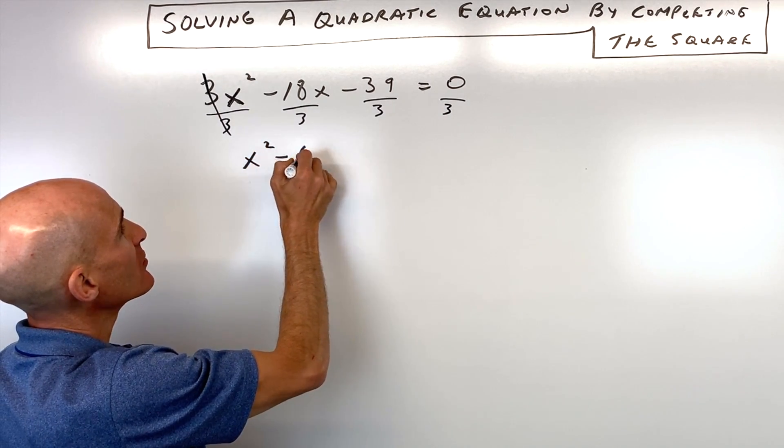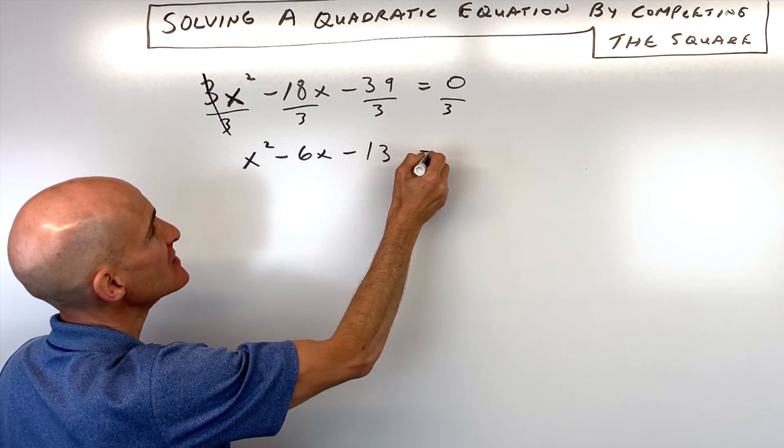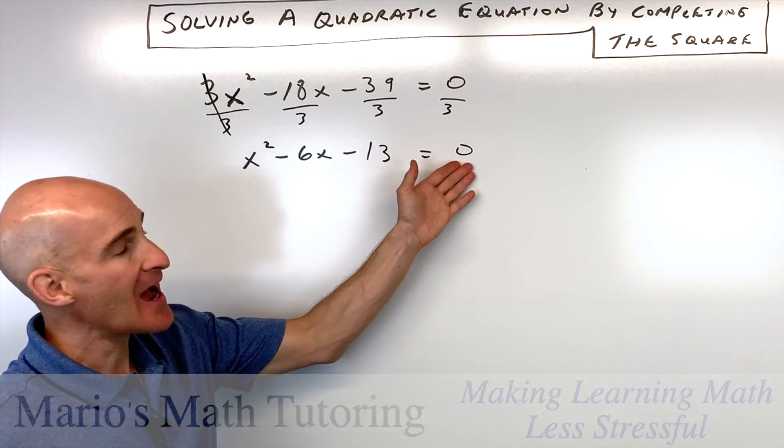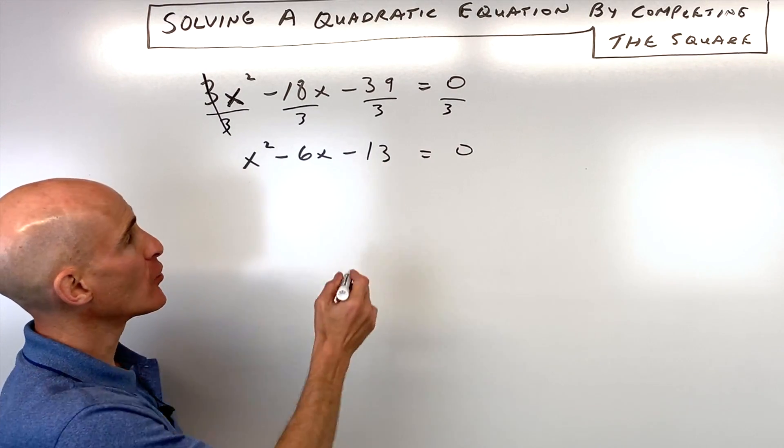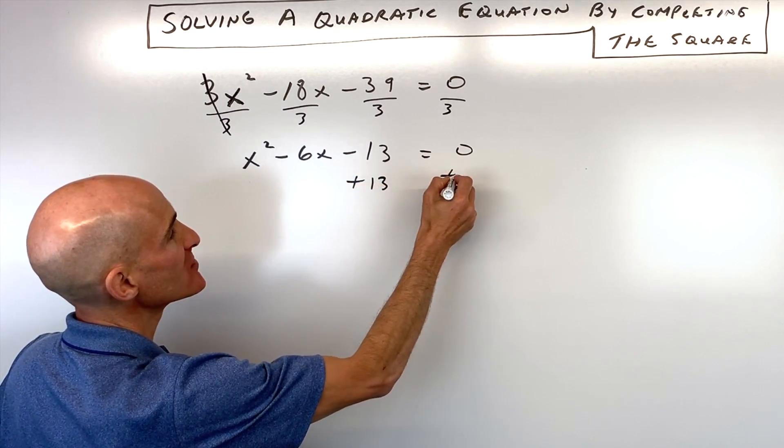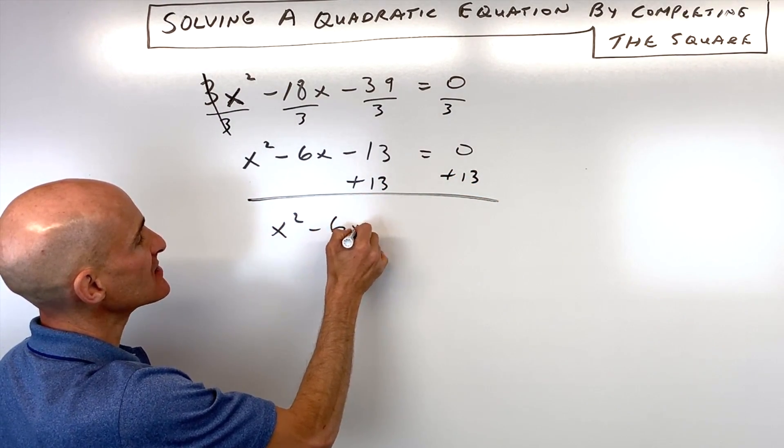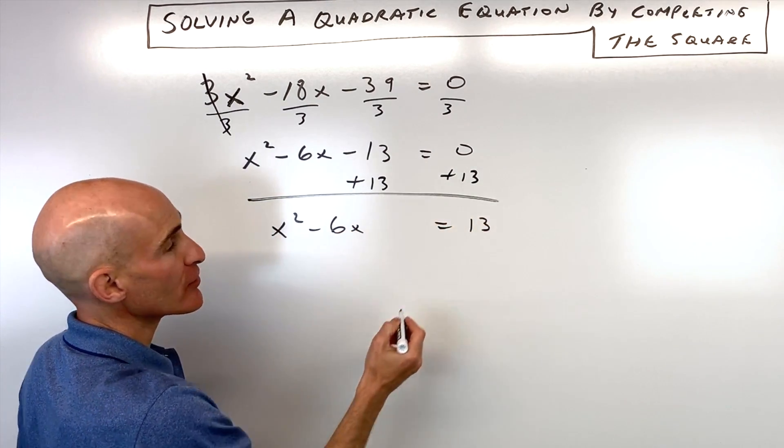We've got x squared minus 6x minus 13 equals 0. Now what you want to do, step number 2, is you want to get the constant, the number here, on the other side of the equation. So we're just going to add 13 to both sides. And so now we have x squared minus 6x equals 13.